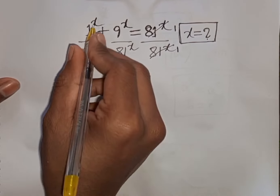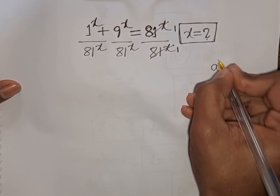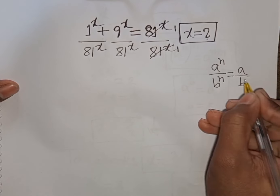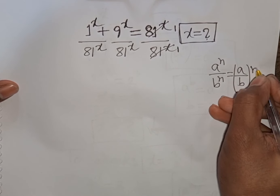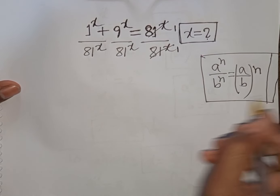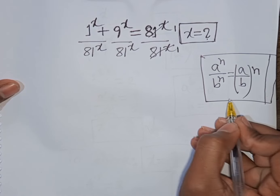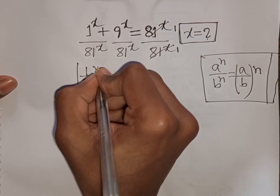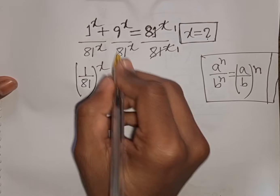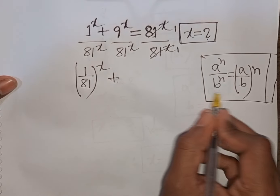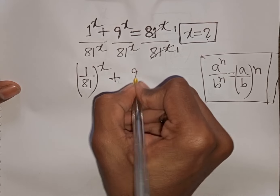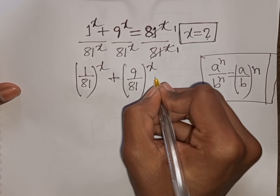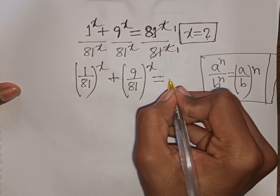We see x is the same power but with different bases. According to the formula a power n over b power n equals (a over b) power n, we can write (1 over 81) power x plus (9 over 81) power x equals 1 divided by 1, which means it equals 1.